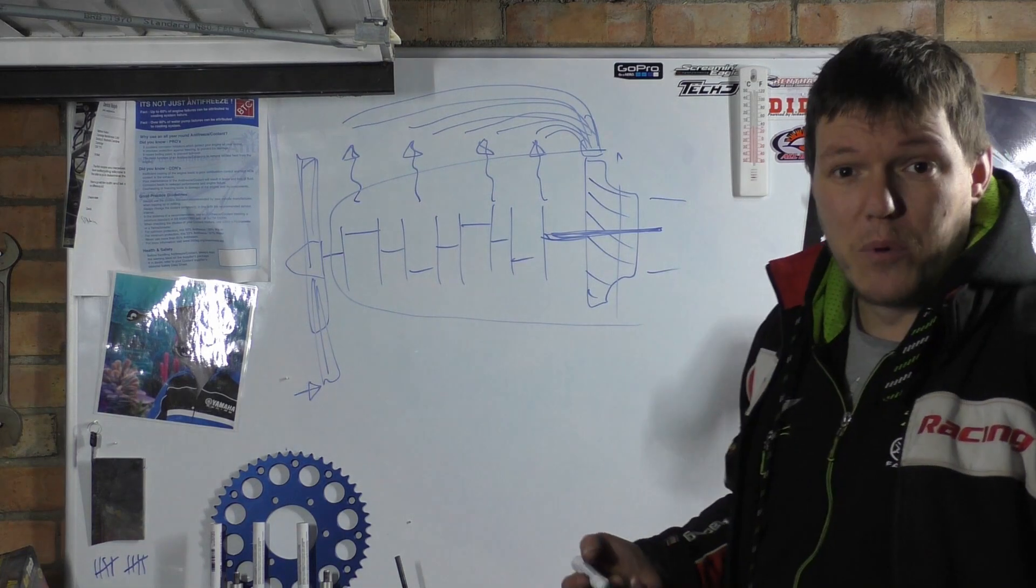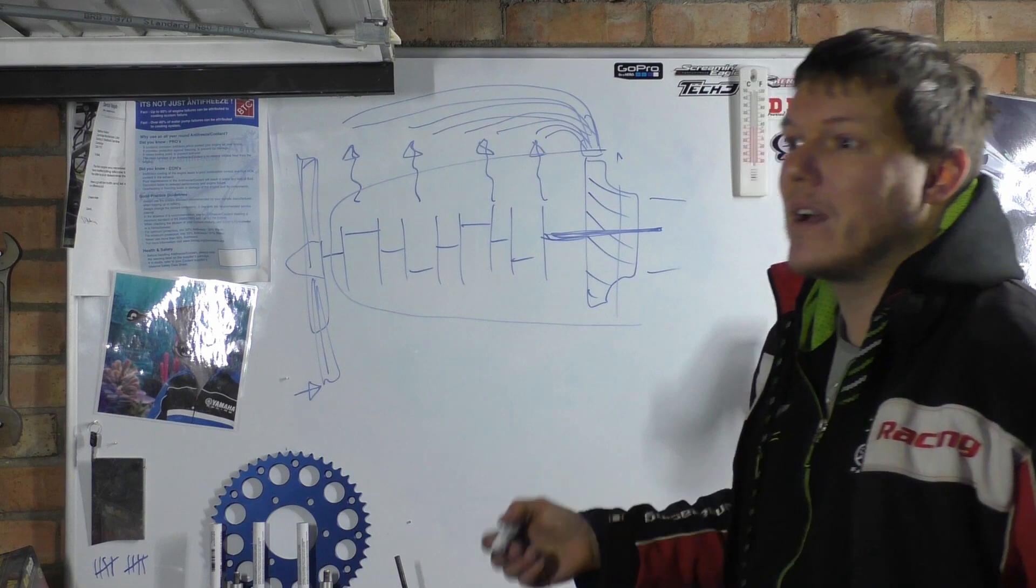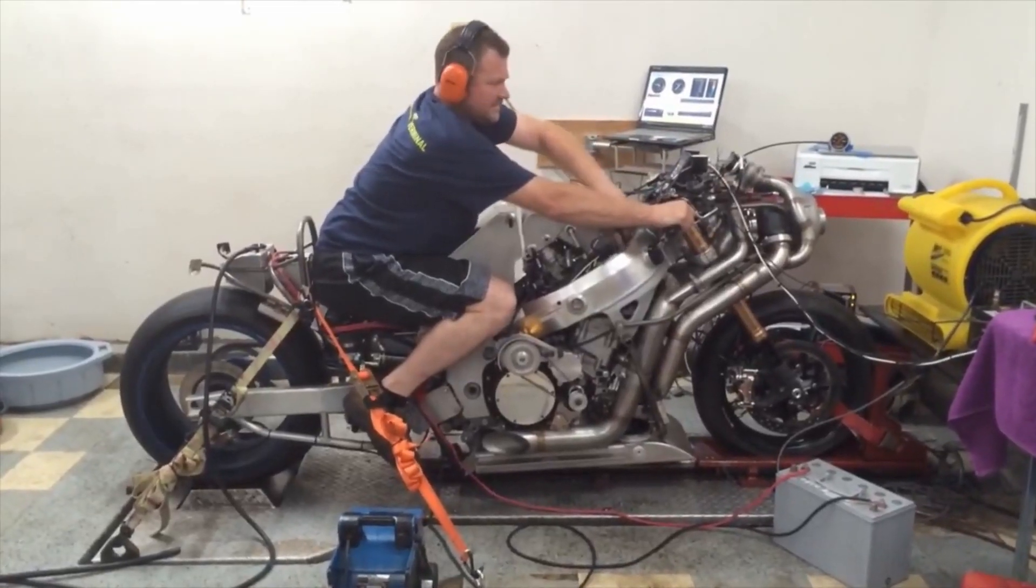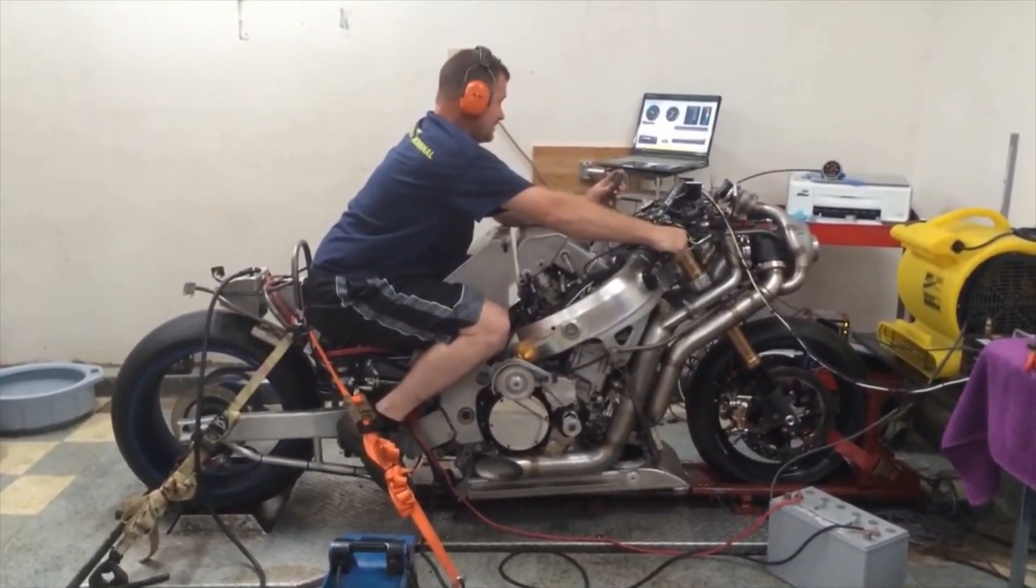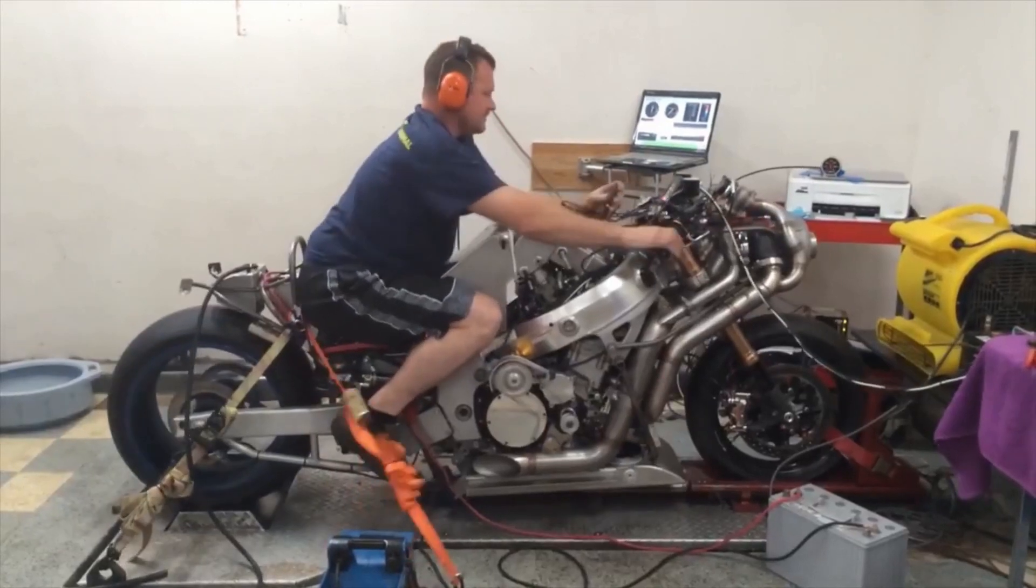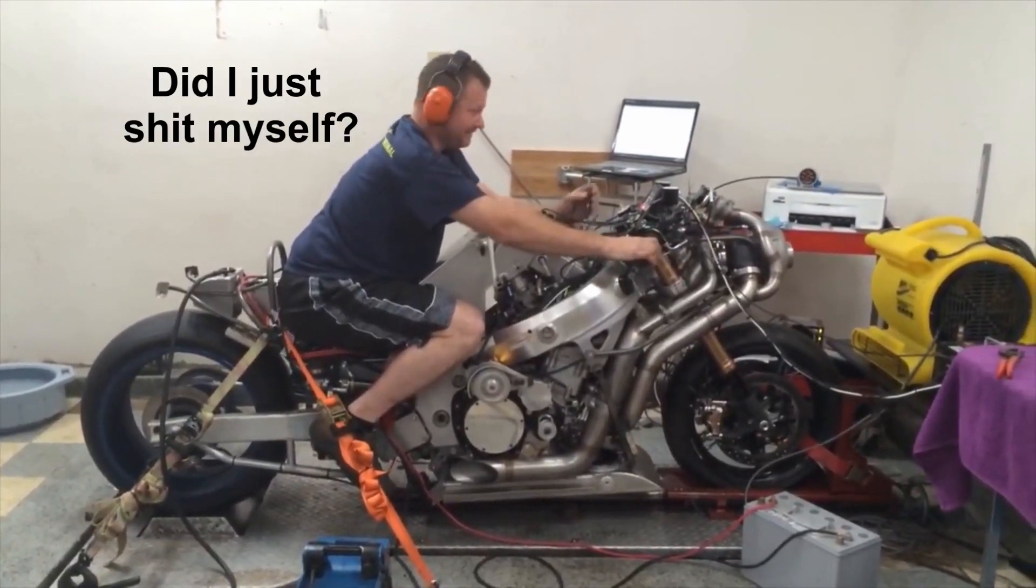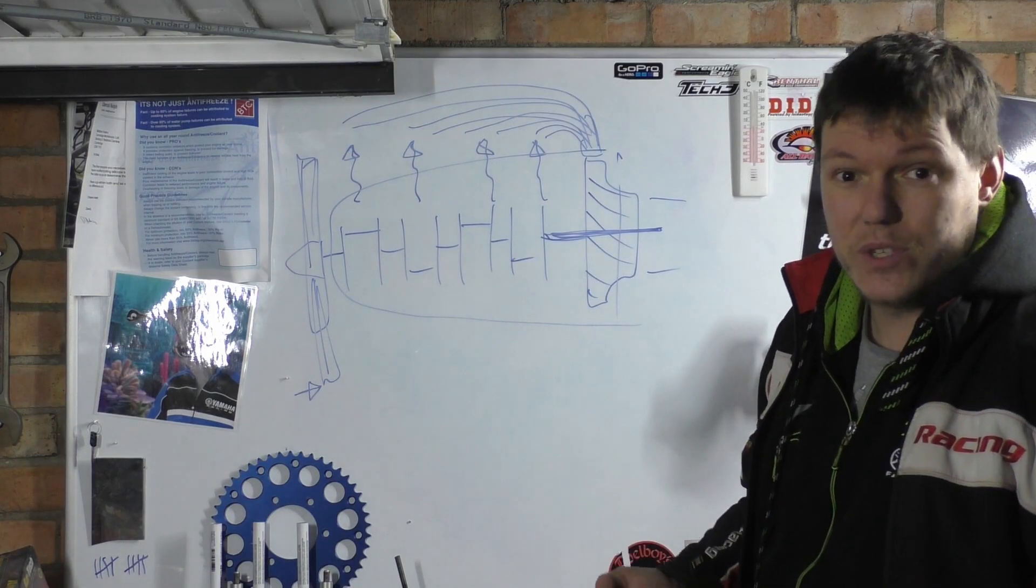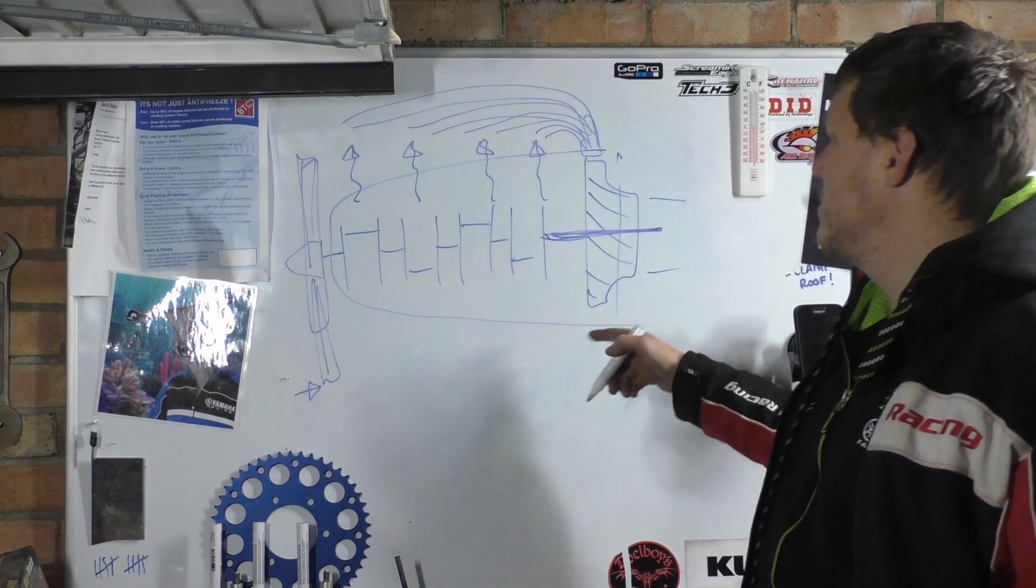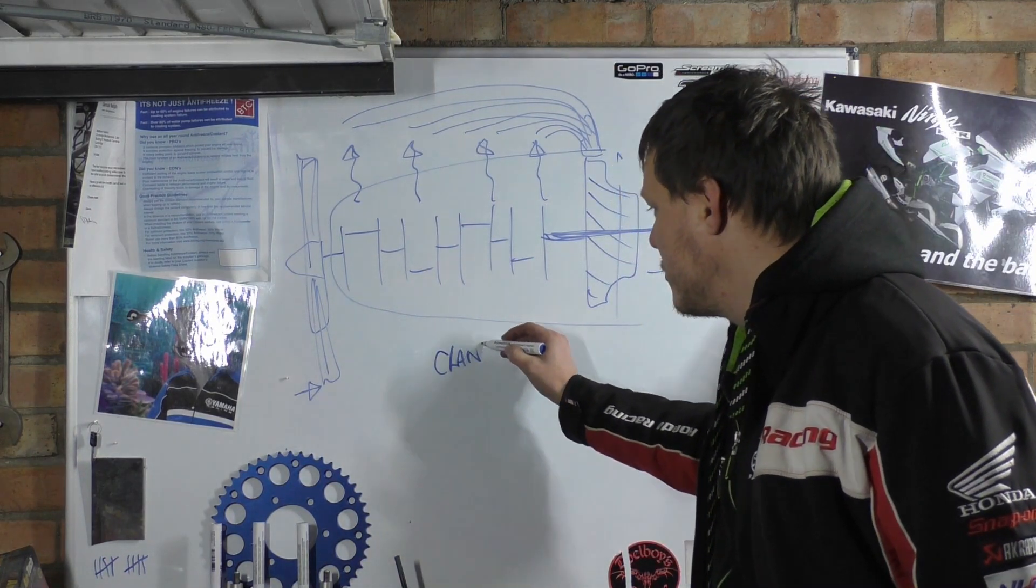But that's basically what a turbo compound engine is. That's one type. There are other types that we will go into. The Santa Pod one's a good example. There are other types of turbo compound. This is, we should just call this a crank driven, a crank driven turbo compound.